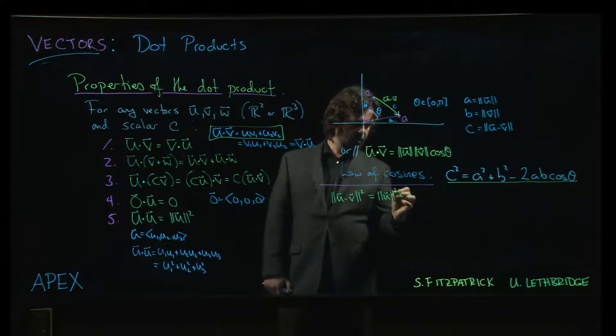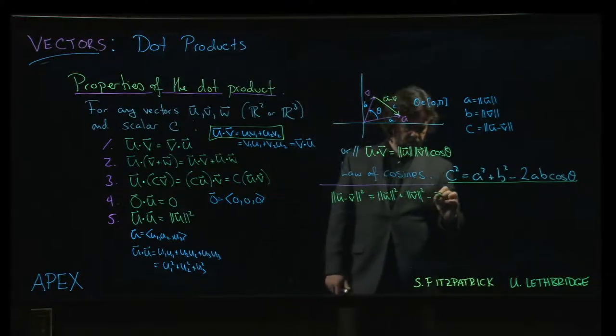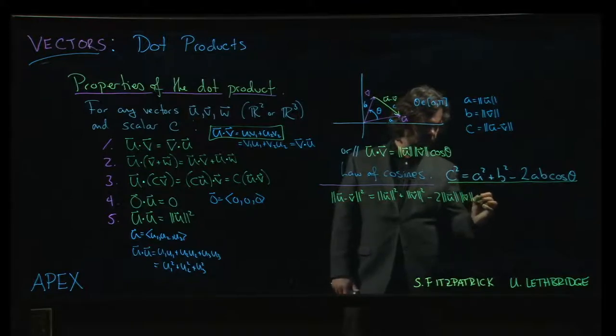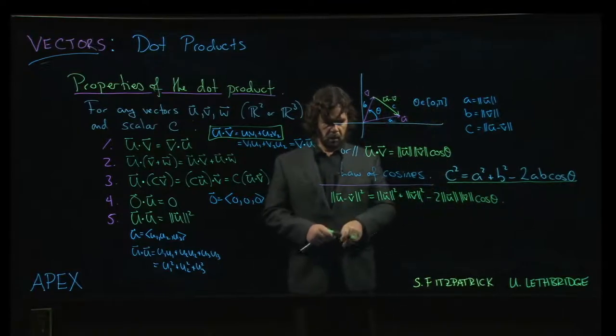b is the magnitude of v, also squared. And then we have 2 times the magnitude of u times the magnitude of v times cosine of this angle.